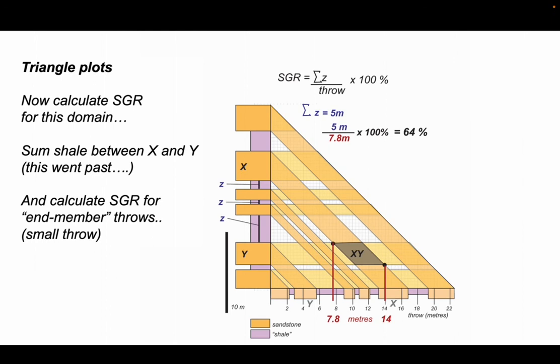Let's do the same now for the larger throw, which is 14 meters. Divide five by 14, multiply by 100, and that gives us the shale gouge ratio here of 36%. So we've got different values for shale gouge ratio depending on the throw.